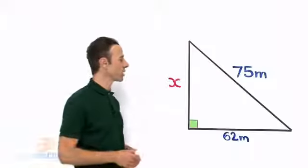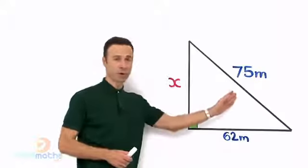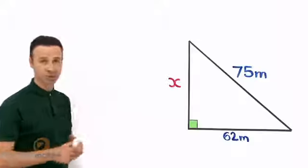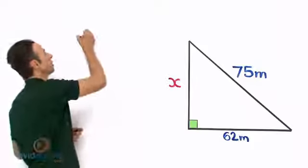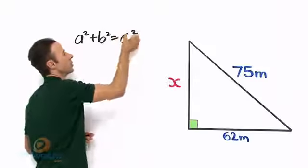Let me write out this right angle triangle here because we are looking for one of these side links and we are given the hypotenuse. So Pythagoras theorem looks like this, as we know: a squared plus b squared equals c squared.